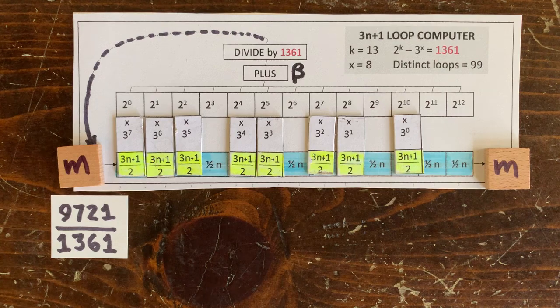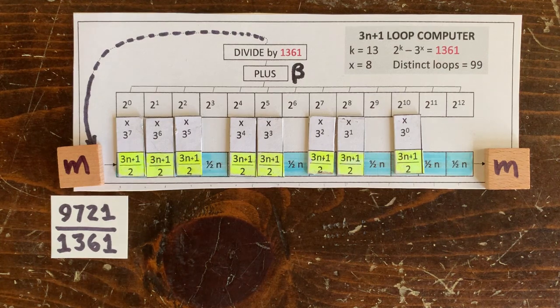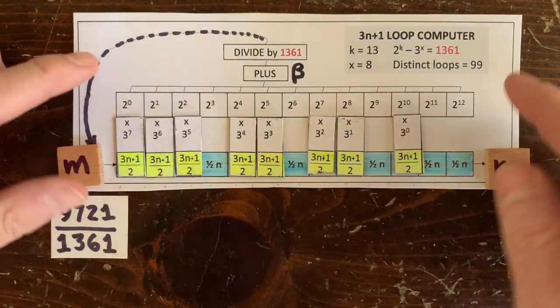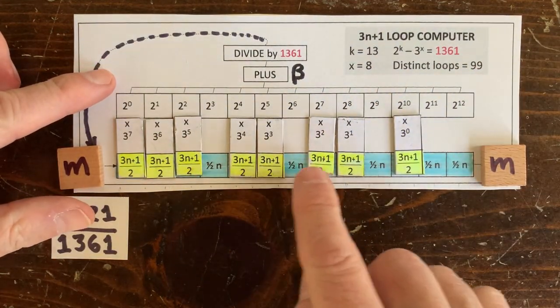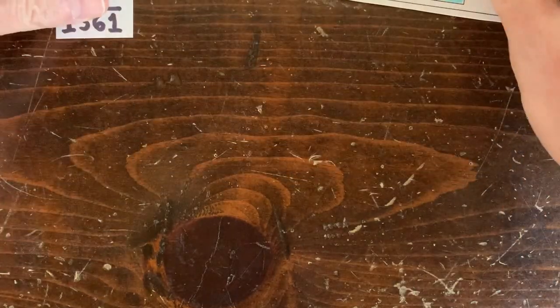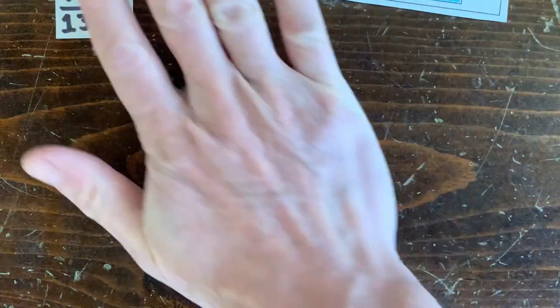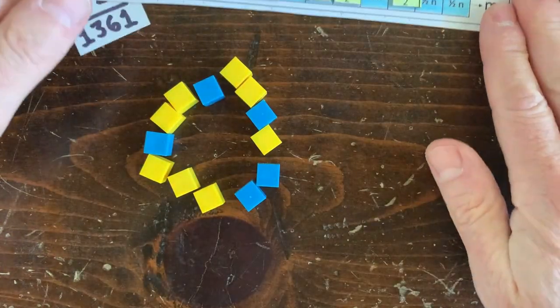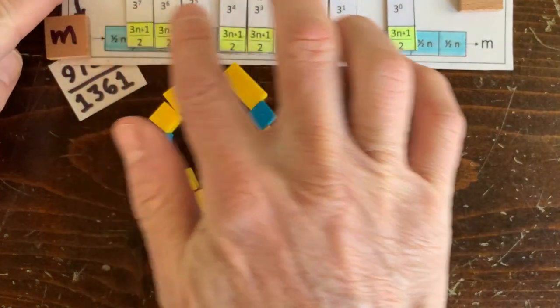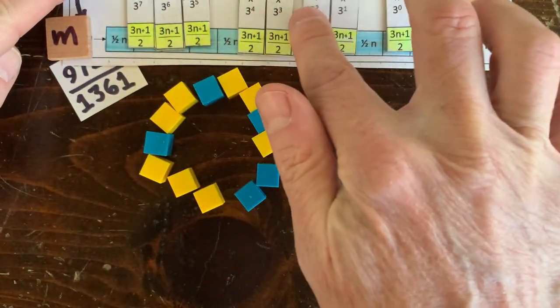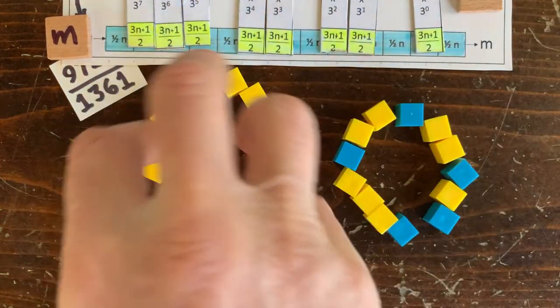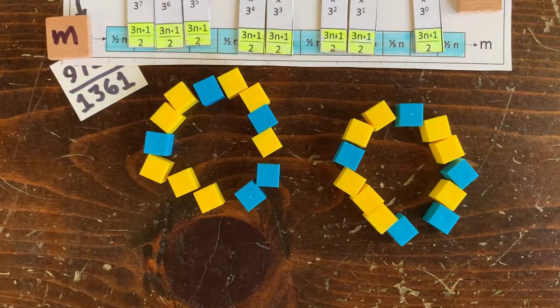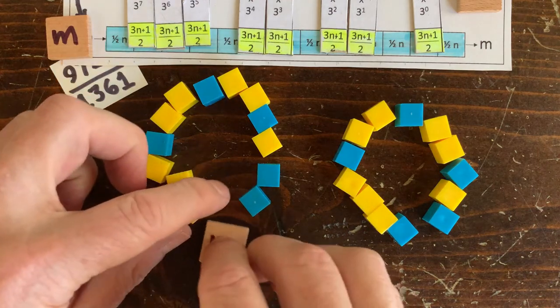So how many operation sequences do we need to try for k equals 13, x equals 8? It's kind of 13 choose 8 because you choose 8 locations for these 8 pieces. Let's say we push all these pieces to the right one space. Well, that's a different operation sequence, but it's actually the same loop. We just rotated the operations, and now m is just a different member of that same loop.